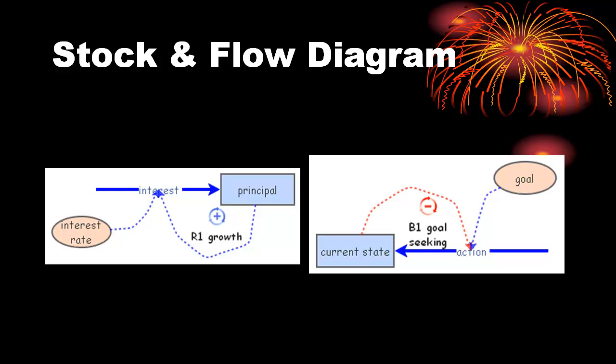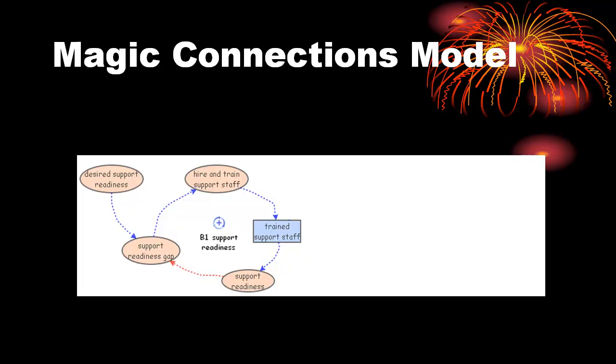The causal loop diagram representation of the interactions within magic connections has three parts. Loop B1 indicates that support continues to hire and train resources to maintain desired support readiness.